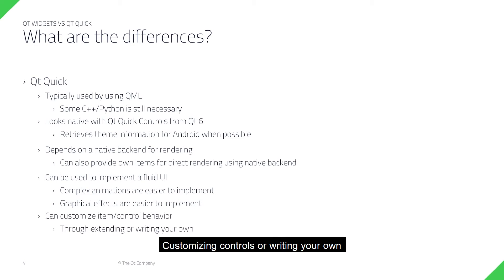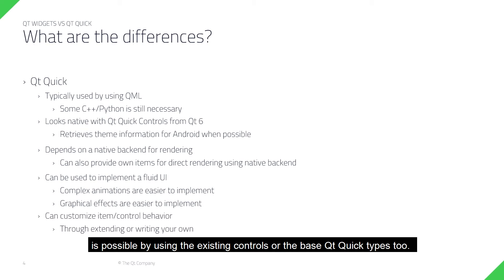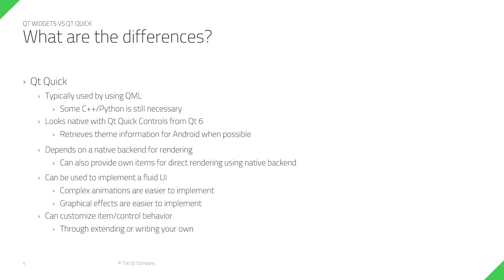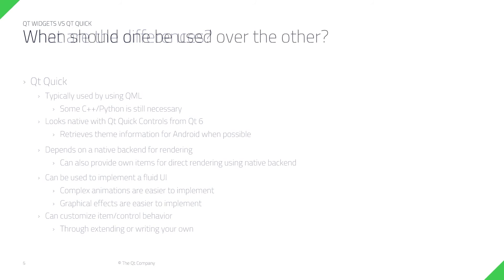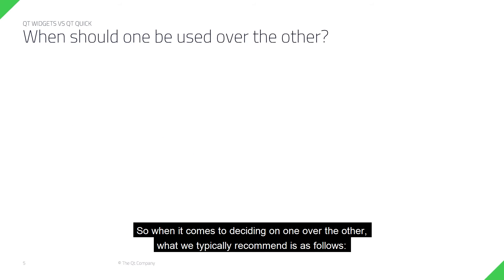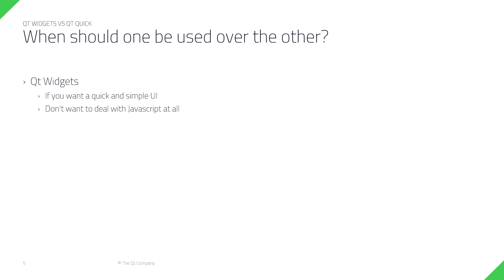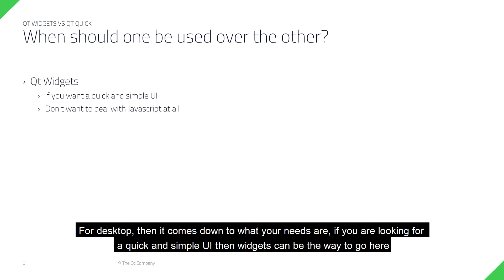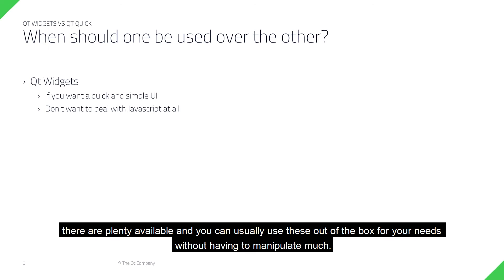Customising controls or writing your own is possible by using the existing controls or the base Qt Quick types. So when it comes to deciding on one over the other, what we typically recommend is as follows. For desktop, it comes down to what your needs are. If you are looking for a quick and simple UI, then widgets can be the way to go — there are plenty available and you can usually use these out of the box for your needs without having to manipulate them much.